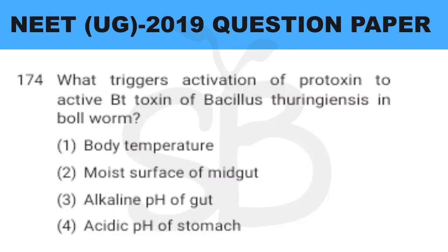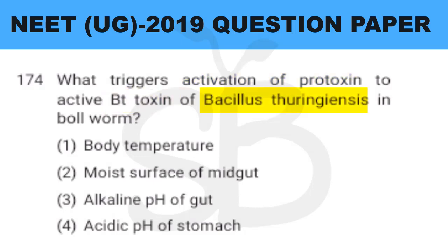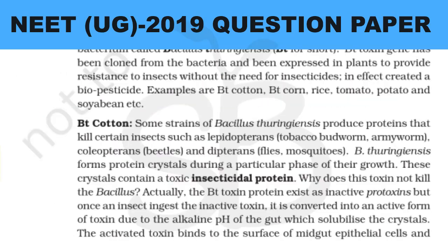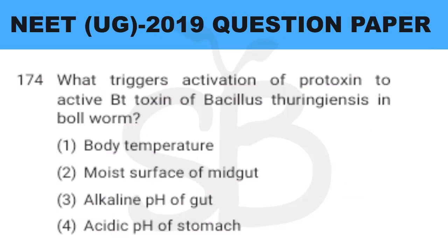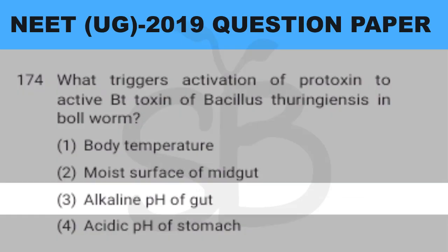Question number 174: what triggers activation of protoxin to active BT toxin of Bacillus thuringiensis in the bollworm? This is from plus 2 biology chapter on biotechnology and its applications, page number 208. The answer is option 3: alkaline pH of the gut.